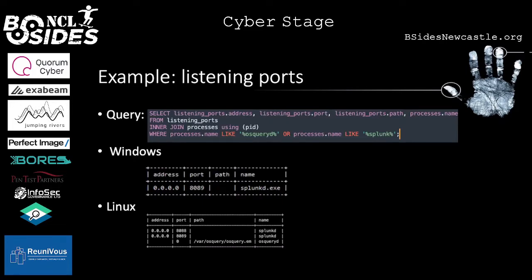Another example: you can also look at listening ports to see which processes are listening on which ports. Using inner joins in OSQuery, we can combine different tables. In this query we're saying: give us the address, the port, and some more information from the listening_ports table, joined with the processes table based on the PID field. The output on Linux or Windows is again almost exactly the same — for example, Splunk is on both operating systems listening on port 8089 on all IP addresses, and on Linux OSQuery is running using a socket instead of a listening port.